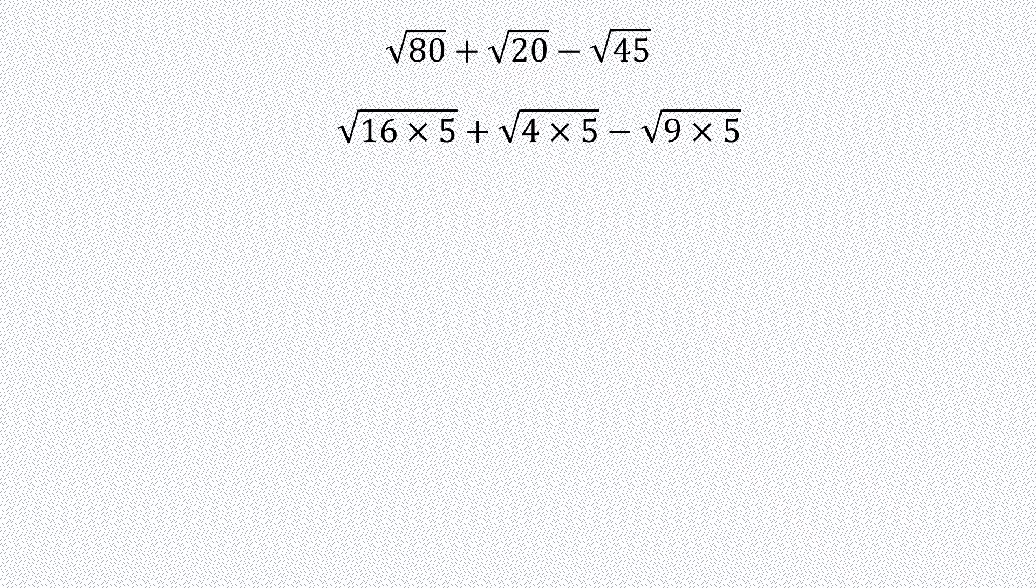And we know the square root of a product is equal to the product of the square roots. So root of 16 times 5 is the same as root 16 times root 5. Root of 4 times 5 is the same as root 4 times root 5. And root of 9 times 5 is the same as root 9 times root 5.